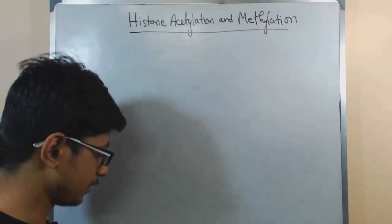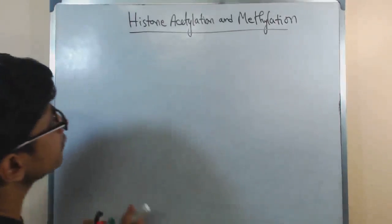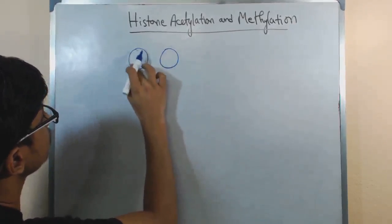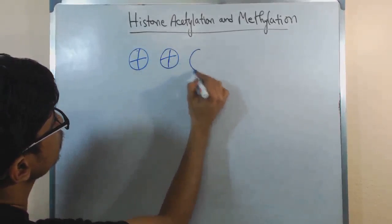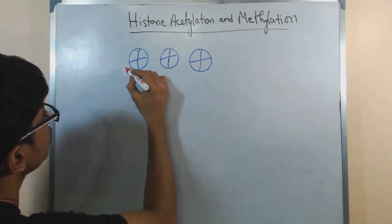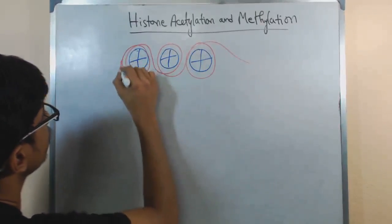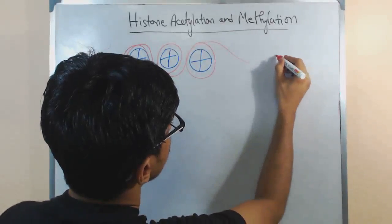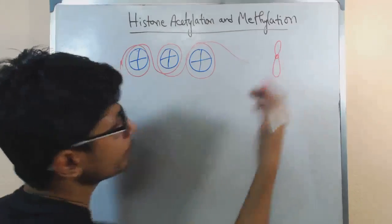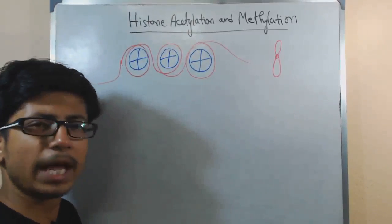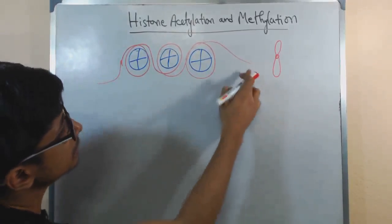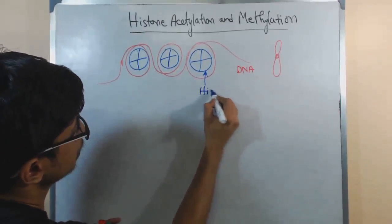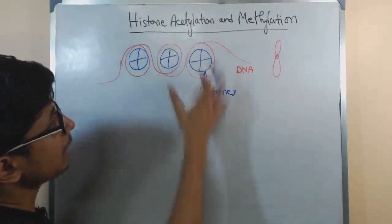Assuming you all know what a histone is, let me draw it again for convenience. Histones are very common protein molecules. Here we have the histone molecules, and we also have the DNA drawn in red. DNA is wrapped around these histone molecules to form a very compact structure called a chromosome. If you zoom into the chromosome, we have the 30-nanometer fiber, and we have the beads-on-a-string model, where the DNA is the string and the histones are the beads.